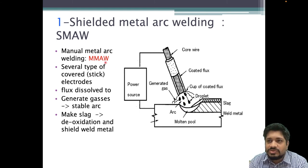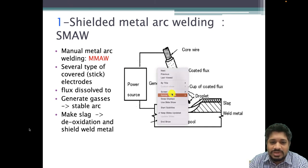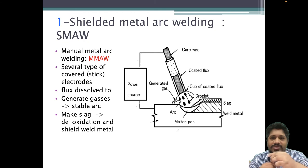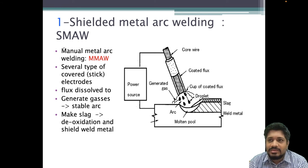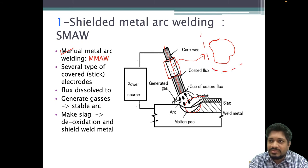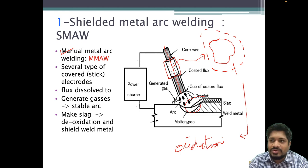Shielded metal arc welding is also called MMAW — manual metal arc welding — because you are manually performing the welding process. The electrode and filler material are together and you carry out the welding by hand. The electrode has a flux coating, and the function of this flux is to protect the molten pool from oxidation.